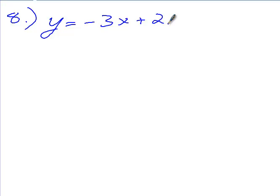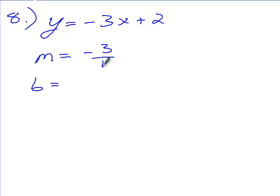Which method do you all prefer? Slope-intercept. So in order to graph slope-intercept, what variable has to be isolated? Y. Is Y by itself up here? So it's already in slope-intercept form. So somebody tell me, what's my M? Negative 3, and we always want to write it as a fraction, right? So it's negative 3 over 1.